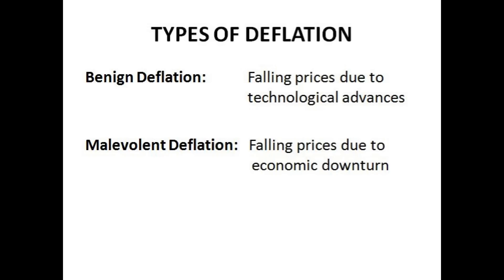Prices may also fall as well as rise. They might fall because of increases in the quality of technology used in production. For example, if a factory previously produced 10 mugs a day and gets a new machine that produces 20 mugs a day with the same or fewer workers, costs of production fall and prices can be lowered to increase demand. This leads to deflation, but it's benign deflation because it's due to technological advances.